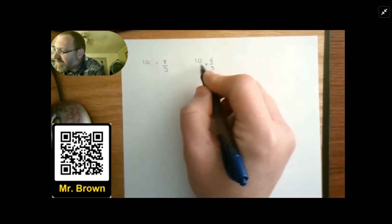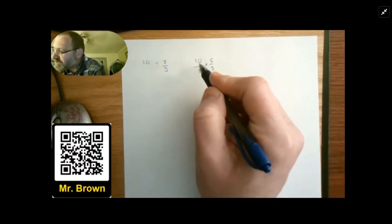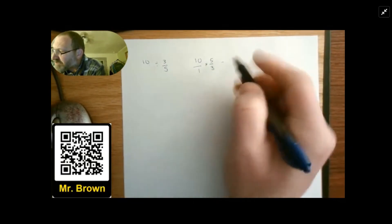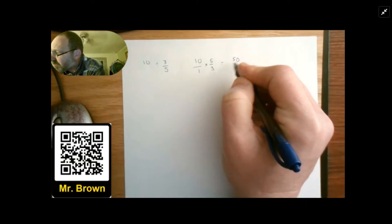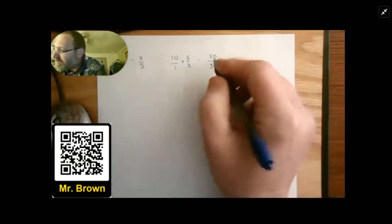So I now have 10 over 1, right? Because any number divided by 1 is itself. So 10 over 1 times five-thirds. 10 times 5 is equal to 50, 1 times 3 is equal to 3.